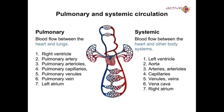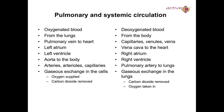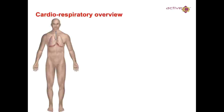Pulmonary and systemic circulation: pulmonary is blood flow between the heart and the lungs, while systemic is blood flow from the heart to all other parts of the body. Pulmonary circulation carries oxygenated blood from the lungs; systemic carries deoxygenated blood to the body. Gaseous exchange takes place in the cells — oxygen is supplied and carbon dioxide is removed via systemic circulation, while gas exchange in the lungs occurs via pulmonary circulation.